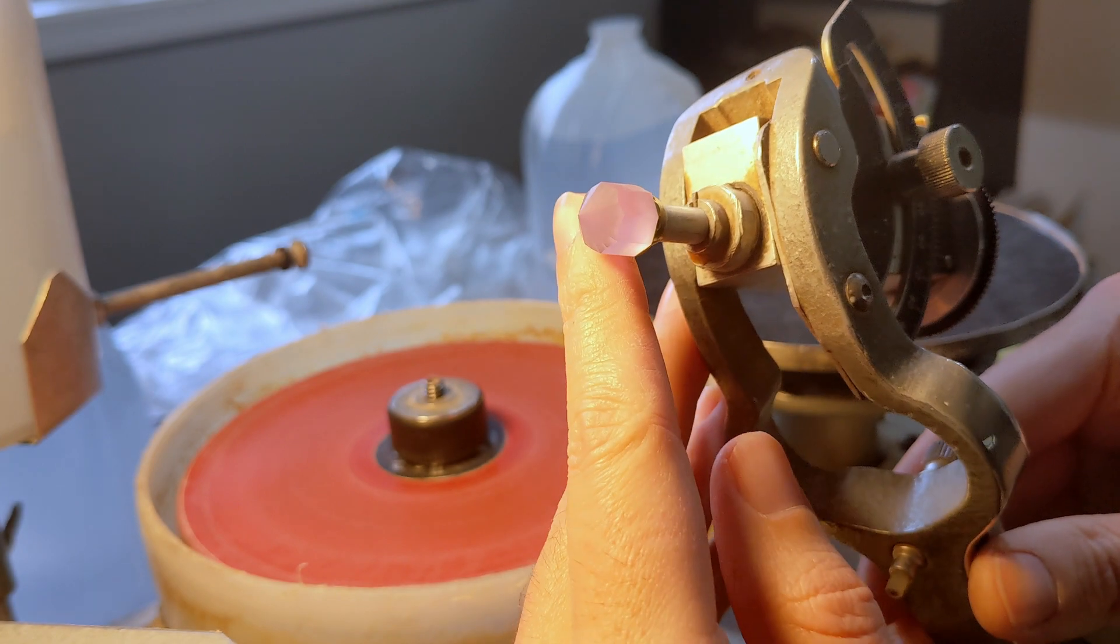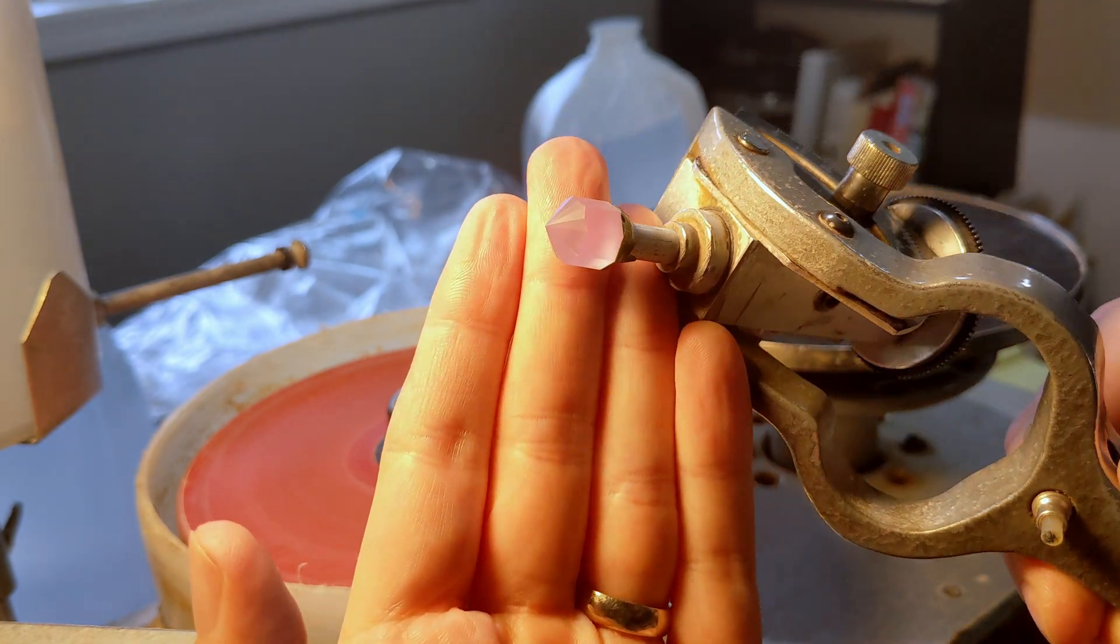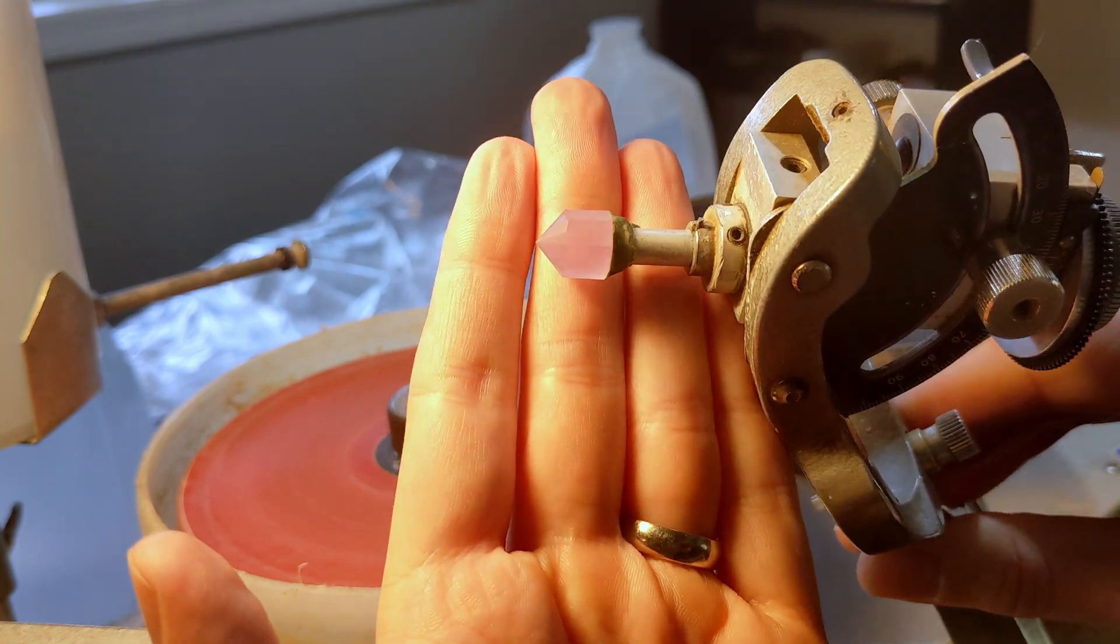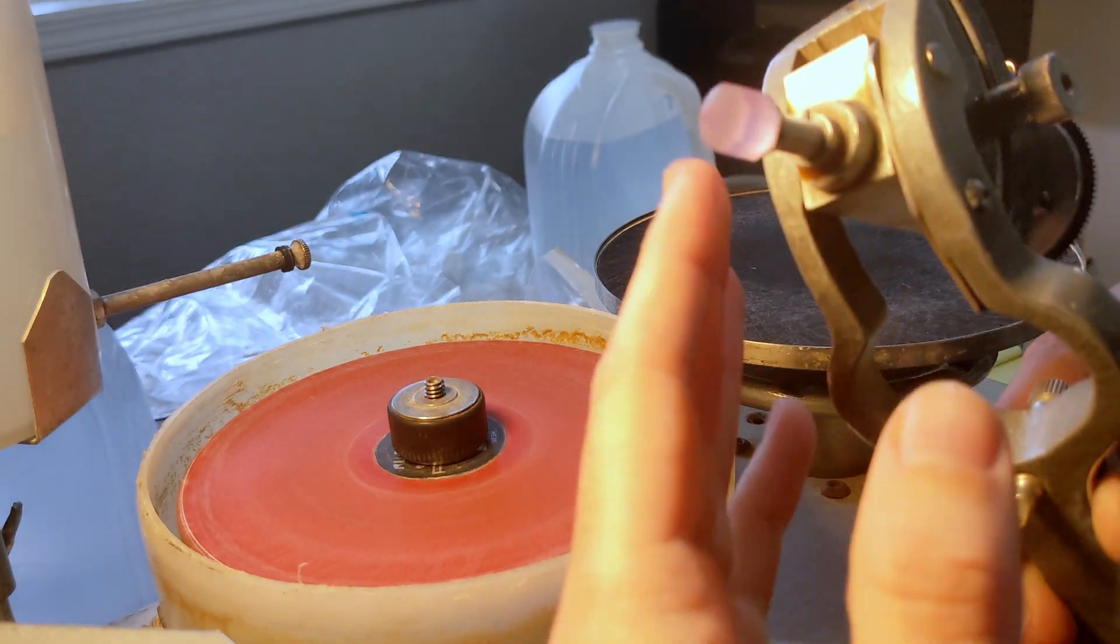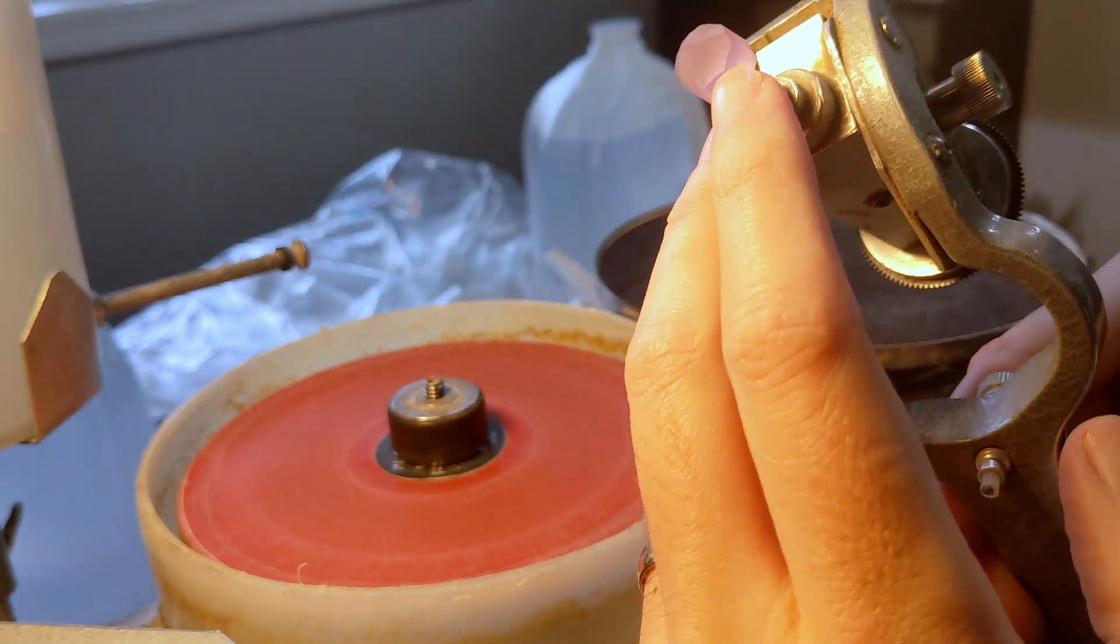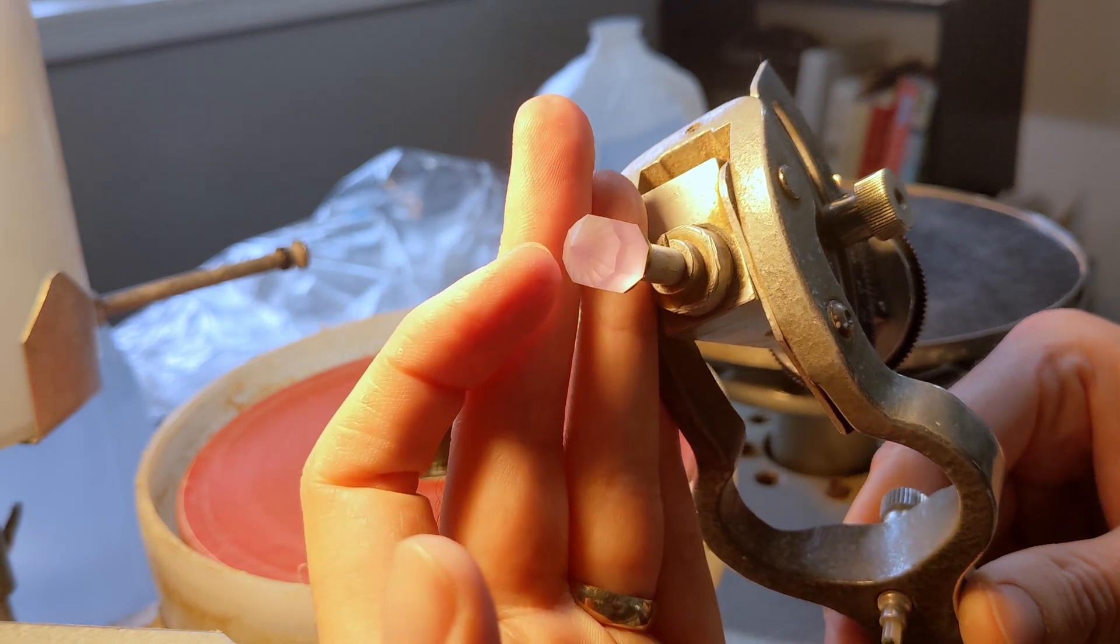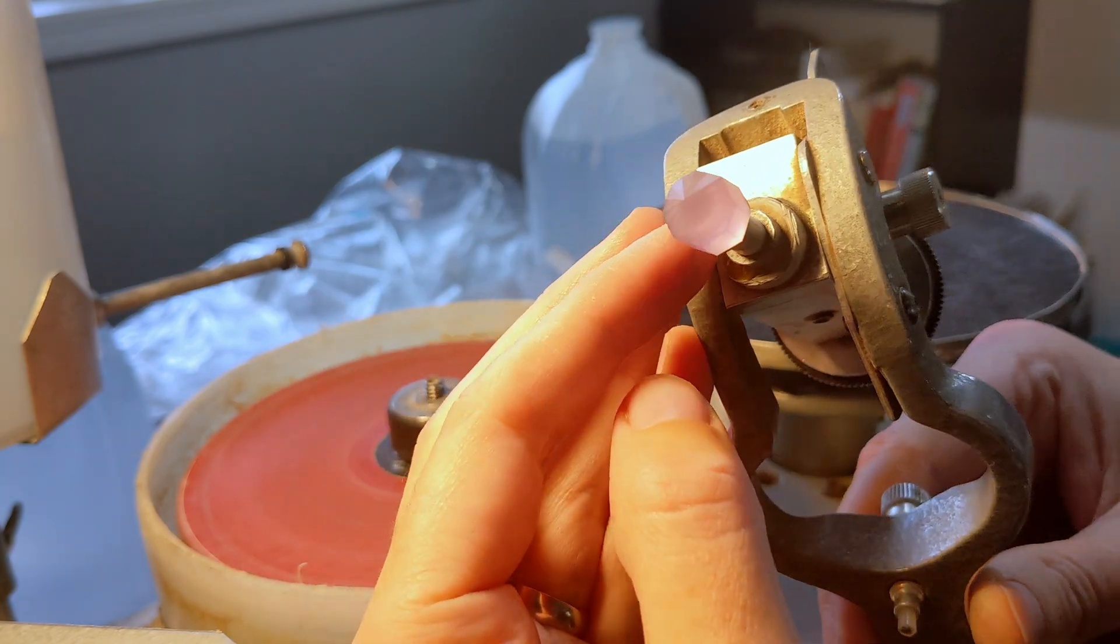And the girdle is faceted all the way around. There's one facet that's a little bit low, but I just did that with the 260, and so now I'm going to move on to the 600 pre-polish lap and finalize the placement of these facets and then work the girdle in just a little bit more to make everything even as I go around.